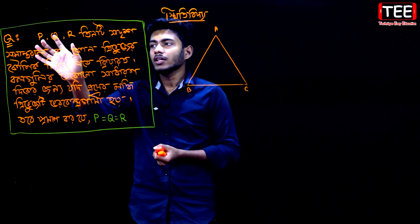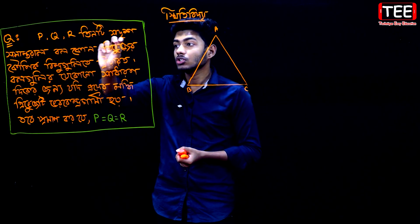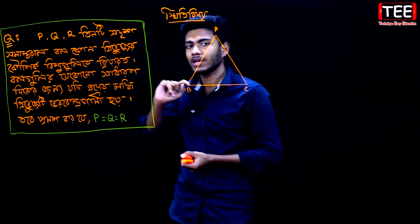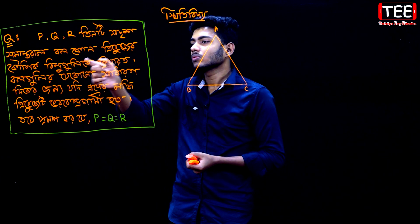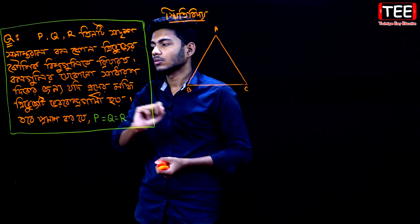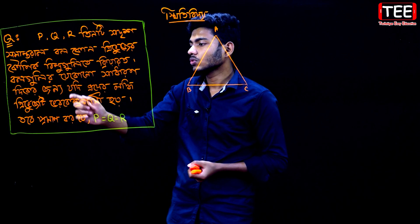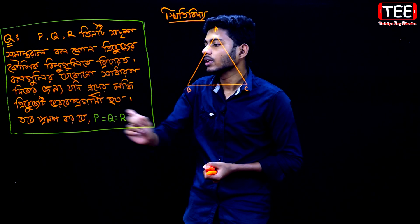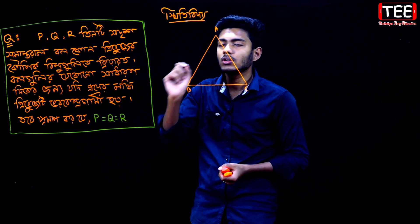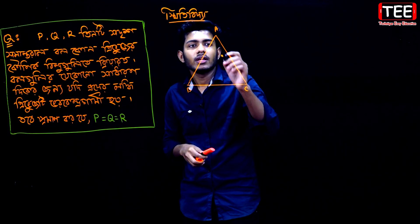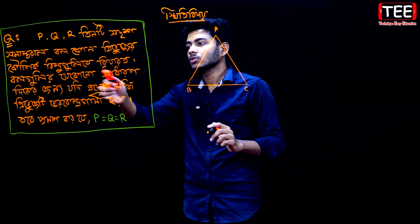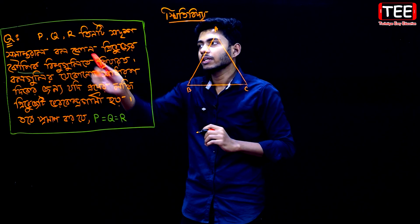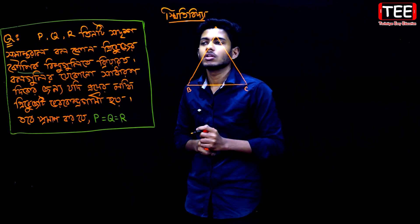What is the problem? PQR is a positive ball. When we have the full of QR, we can see that we have the full of QR. Here we have ACB, and if PQ is equal to the ball.